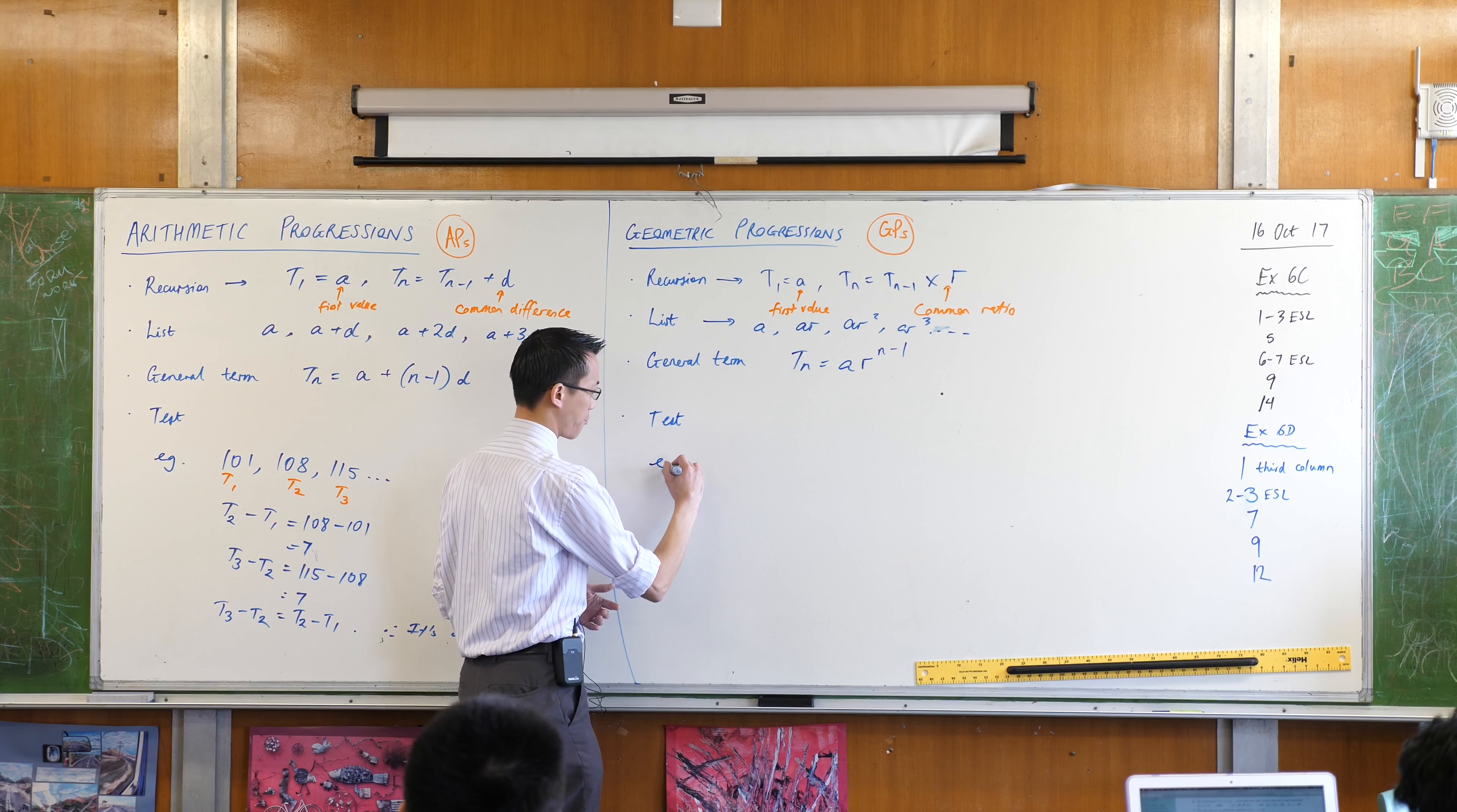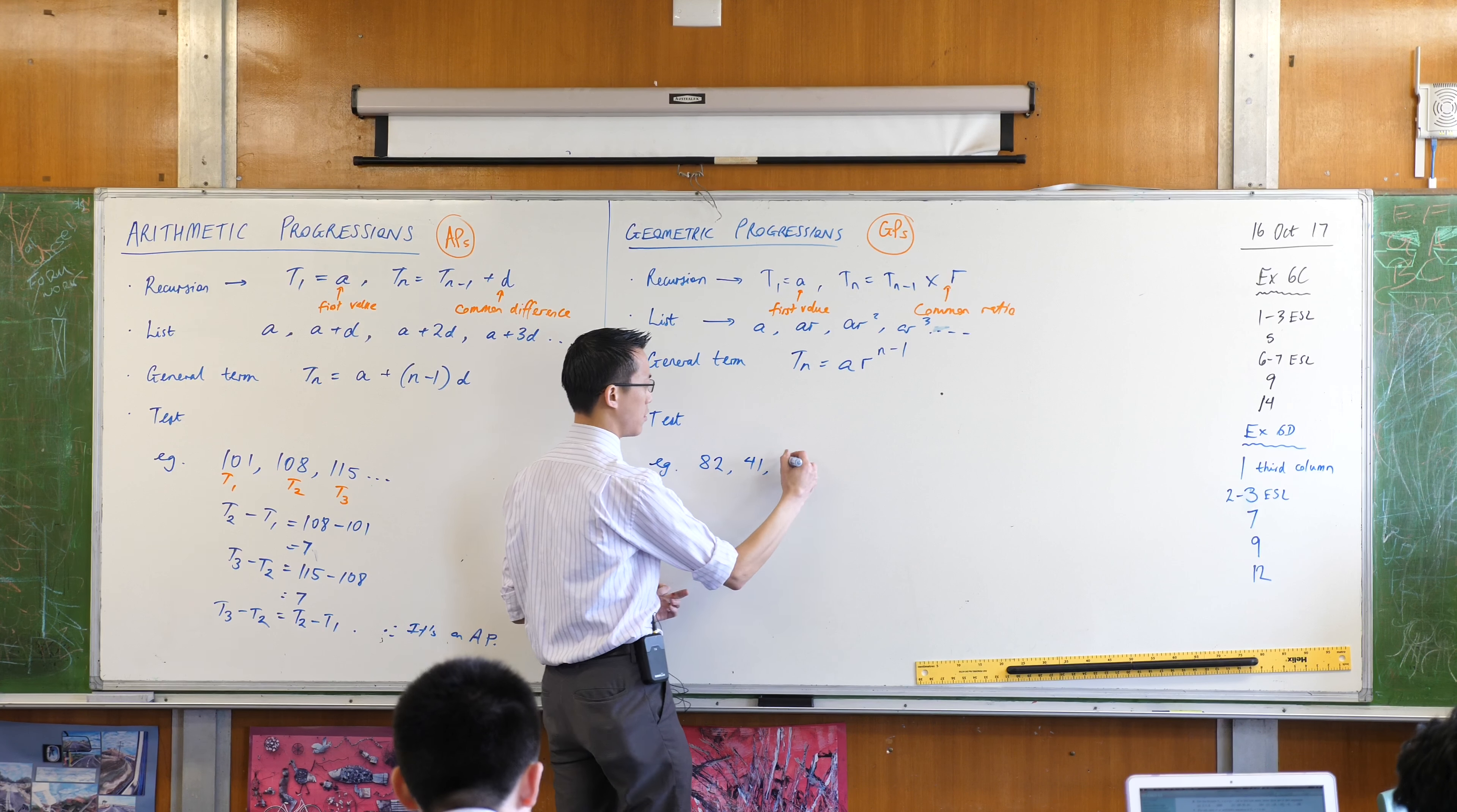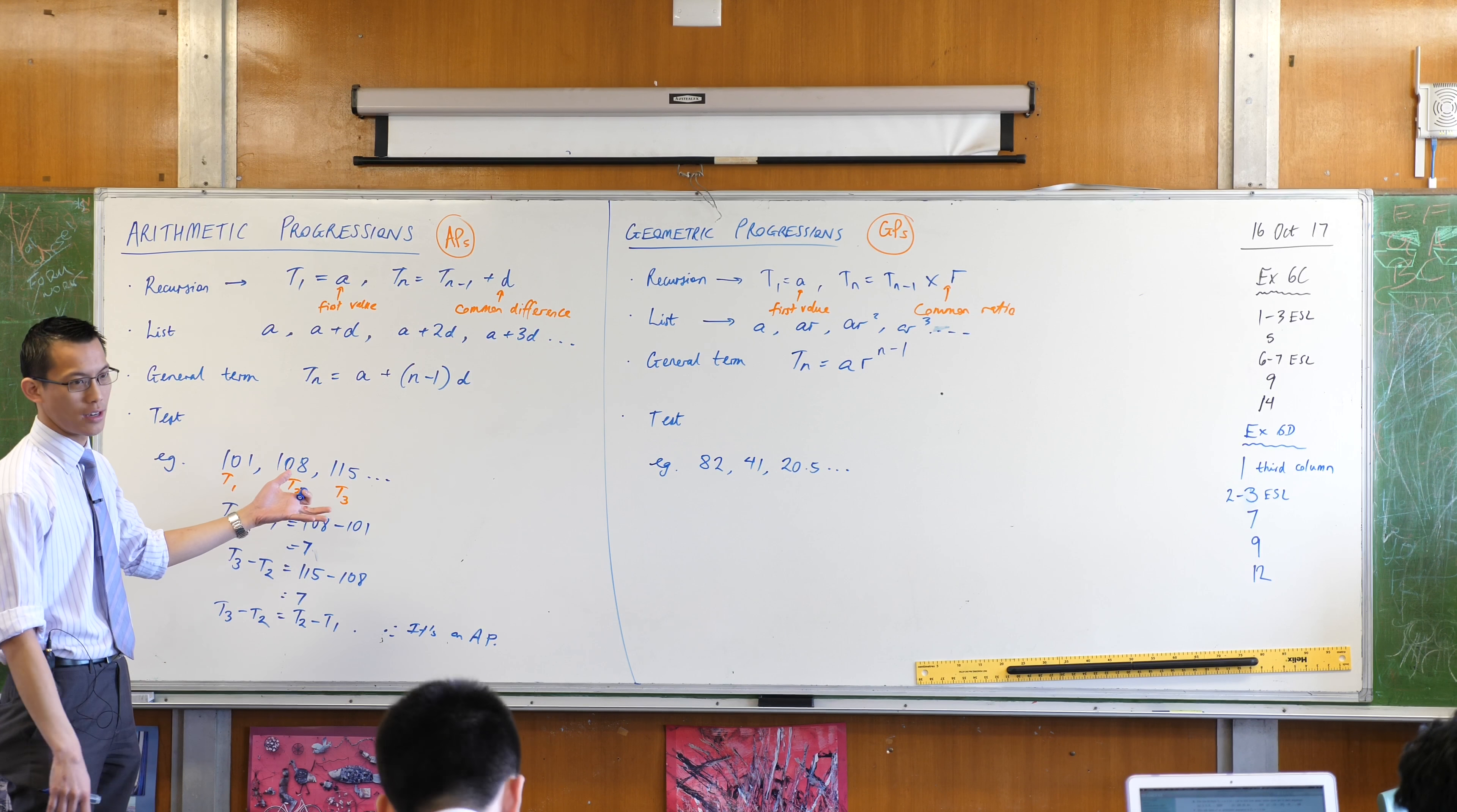If I divide subsequent terms then I will find out whether there is a common ratio. So as an example, if I went for something like say 82, 41. So if I were provided with this sequence, how would I test whether it has a common ratio or not?